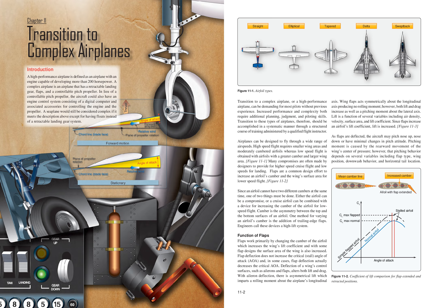Airplanes can be designed to fly through a wide range of airspeeds. High-speed flight requires smaller wing areas and moderately cambered airfoils, whereas low-speed flight is obtained with airfoils with greater camber and larger wing area. Many compromises are often made by designers to provide for higher-speed cruise flight and low speeds for landing. Flaps are a common design effort to increase an airfoil's camber and wing surface area for lower-speed flight. Since an airfoil cannot have two different cambers at the same time, either the airfoil can be a compromise, or a cruise airfoil can be combined with a device for increasing camber for low-speed flight. Camber is the asymmetry between the top and bottom surfaces of an airfoil, and one method for varying camber is the addition of trailing edge flaps, which engineers call a high-lift system.